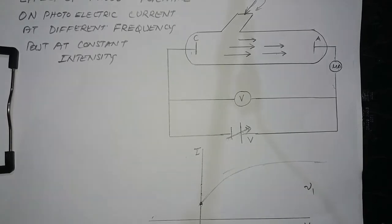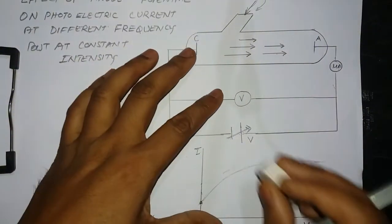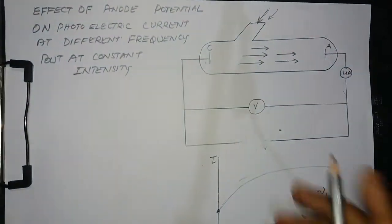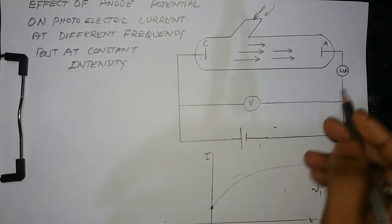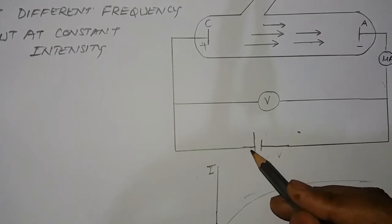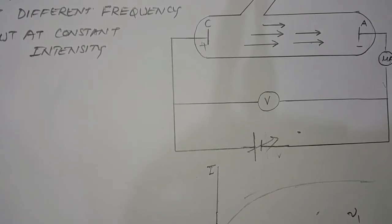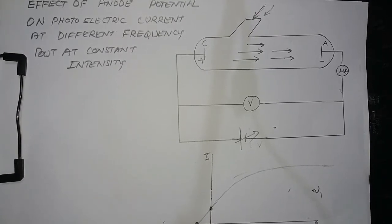Now we are going to reverse the polarity of the cell. When the polarity is reversed, a retarding potential is applied. What happens is that the photoelectric current starts decreasing and it becomes zero at a voltage we call V₀₁.